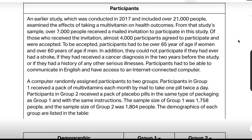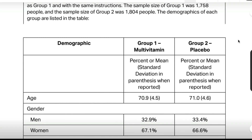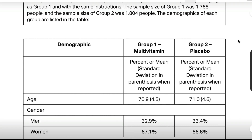Participants had to be able to communicate in English and have access to an internet-connected computer. A computer randomly assigned participants to two groups. Participants in Group 1 received a pack of multivitamins each month by mail to take one pill twice a day. Participants in Group 2 received a pack of placebo pills in the same type of packaging as Group 1 and with the same instructions. The sample size of Group 1 was 1,758 people, and the sample size of Group 2 was 1,804 people. The demographics of each group are listed in the table.